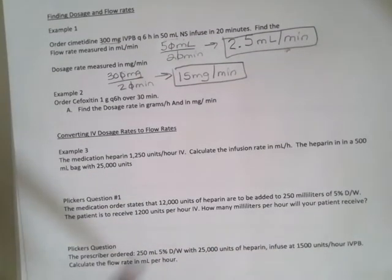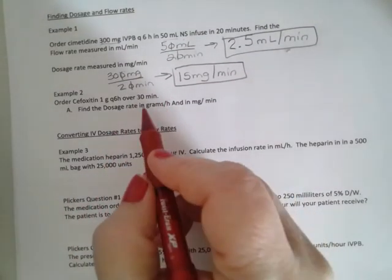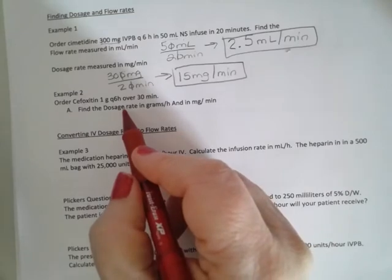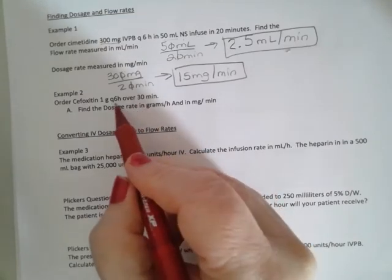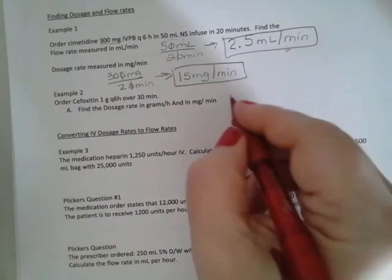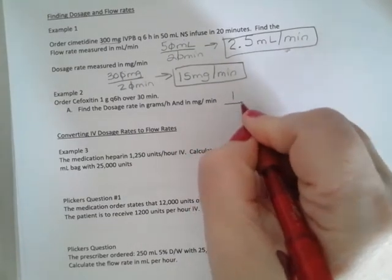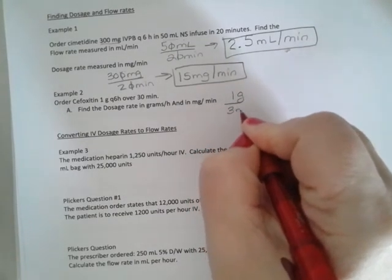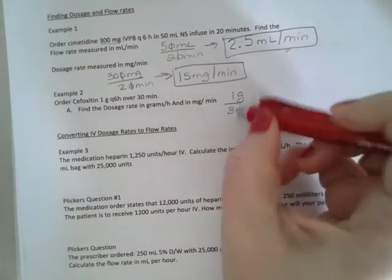In example two, we have one gram every six hours over 30 minutes. So if we have one gram in 30 minutes...